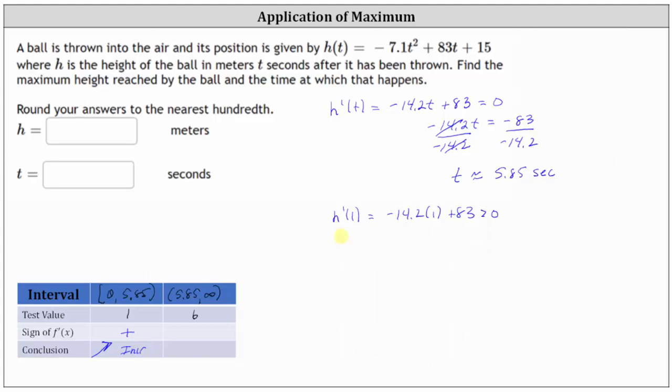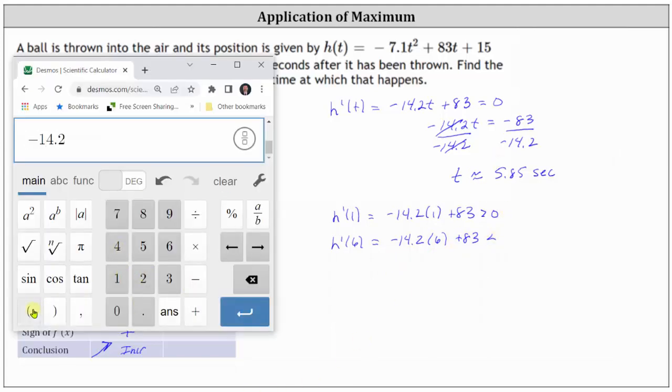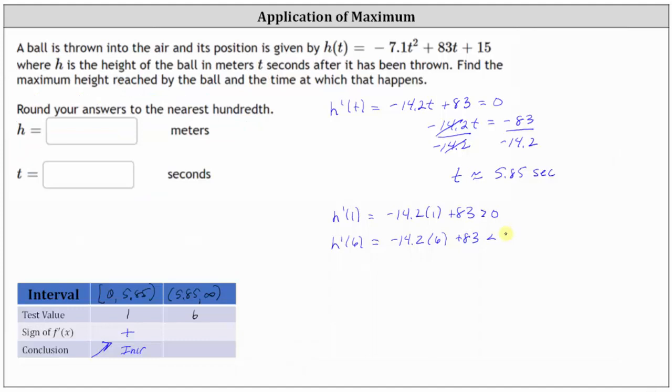Now we need to determine the sign of h prime of six, which is equal to negative 14.2 times six plus 83. This value is going to be negative, but let's go ahead and verify this on the calculator. Notice how the derivative function value is negative or less than zero.